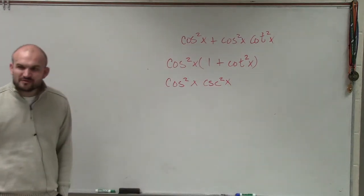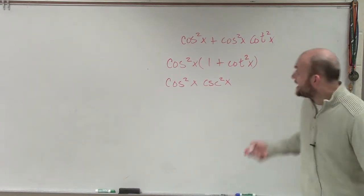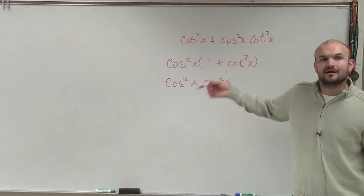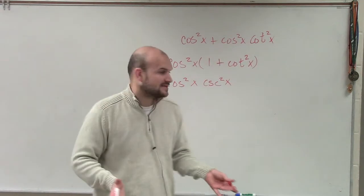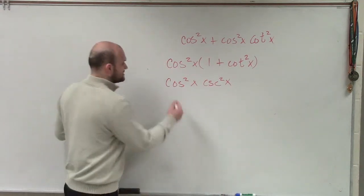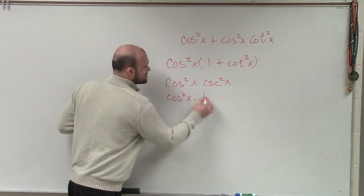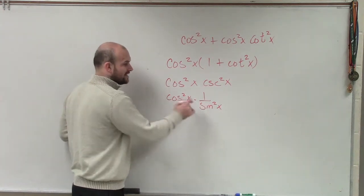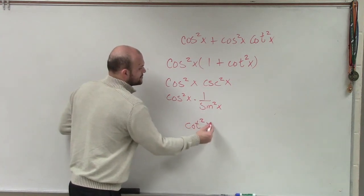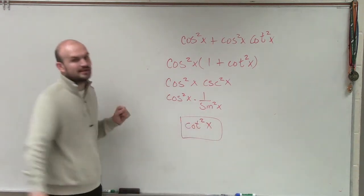And I saw some of you on your test would leave problems like this and you'd say, oh, I'm done, right? And yeah, you did simplify it from there to there. But don't always just assume you're done just because you've gone through a couple steps. If I rewrite this, that can be rewritten as cosine squared of x times 1 over sine squared of x. I can rewrite these together and rewrite it as cotangent squared of x. And that is going to be your final answer.